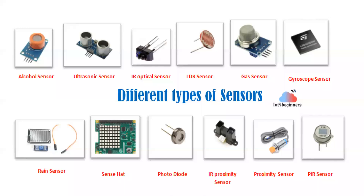You can see different kinds of sensors. There is an alcohol sensor — you would have observed that during peak festival times, police ask drivers to blow into a device. That device uses an alcohol sensor to detect whether the person is drunk. Other sensors include ultrasonic sensor, IR optical sensor, LDR sensor, gas sensor, gyroscopic sensor, and PAR sensor. There are many sensors. With a rain sensor we can detect incoming rain, and with an ultrasonic sensor we can detect whether any object is in front of us. Different sensors are used for different purposes.